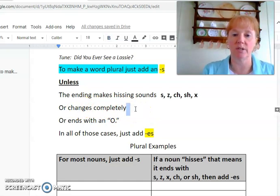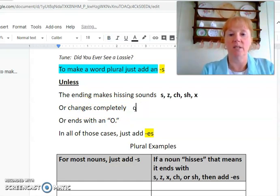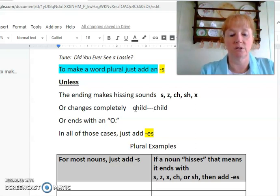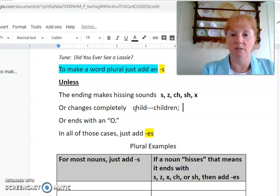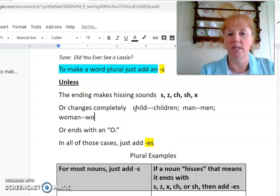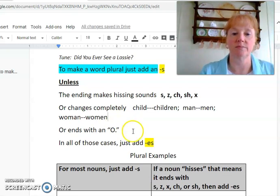Sometimes a word will change completely, and that means a word like child. I have one child. But if I have two or more, I have what? Children. Very good. Or if I have a man. If I have more than one man, I have men. Okay? Or one woman. The plural is women.